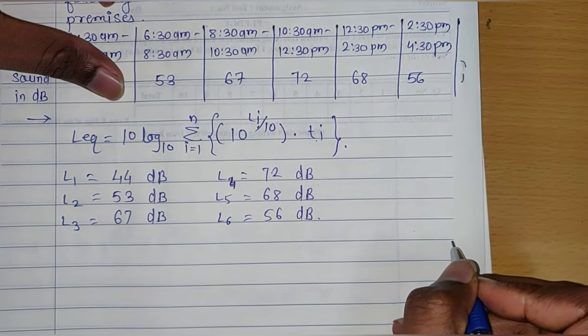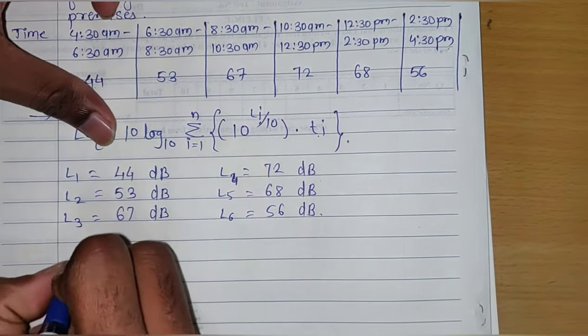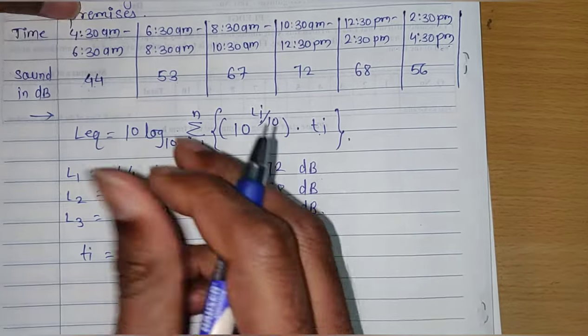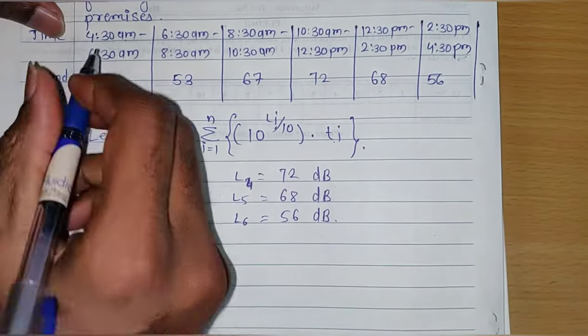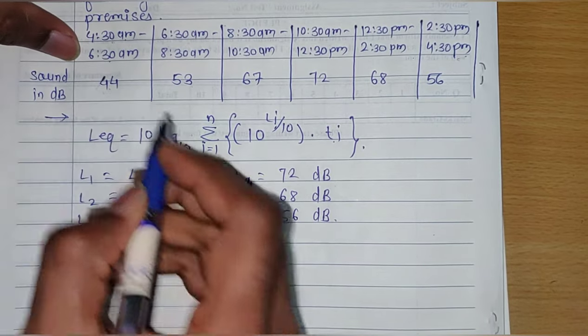Now, t_i is the fraction of total sample time. This means it is the ratio of duration of one sampling time - for example, 4:30 AM to 6:30 AM, which is 2 hours.